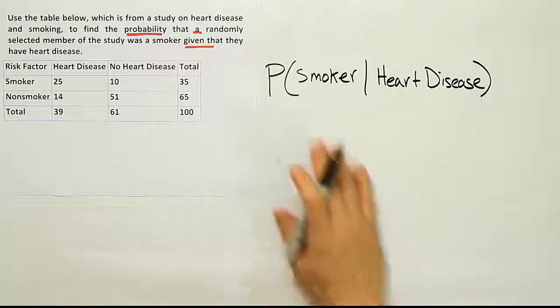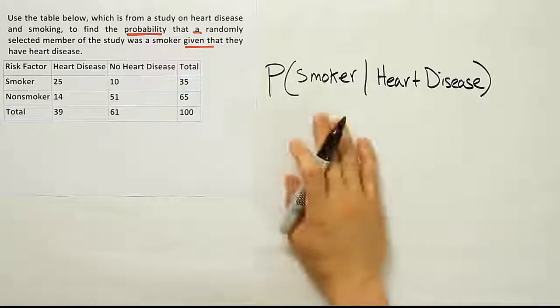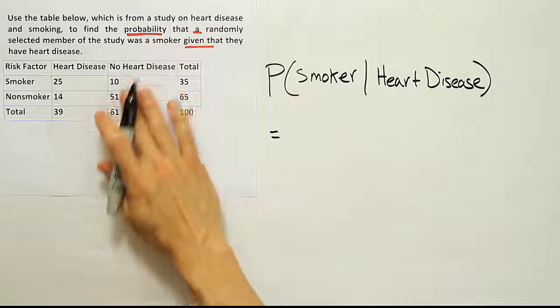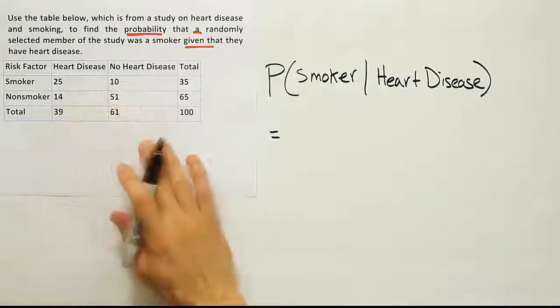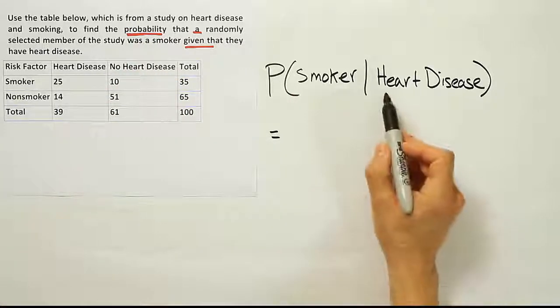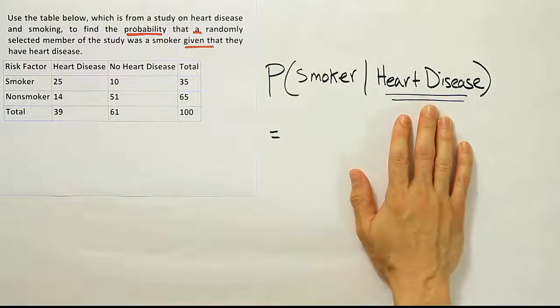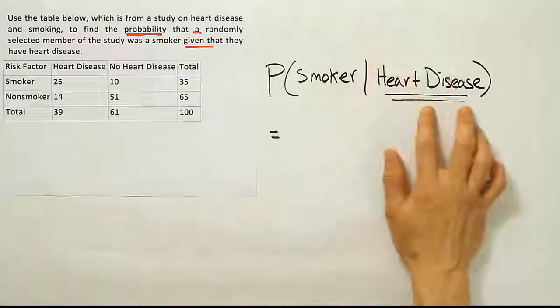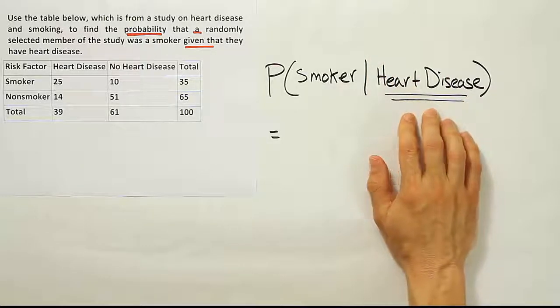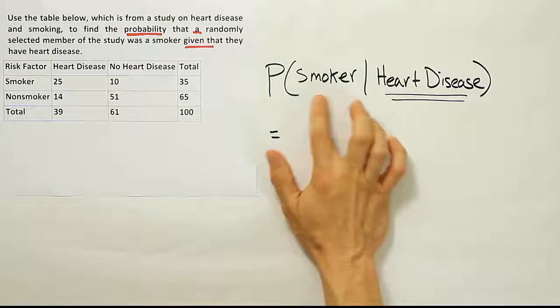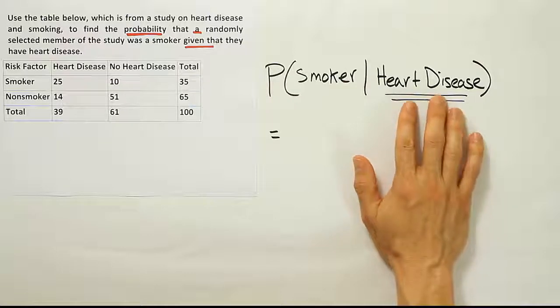Now once we have that expressed, because the data is laid out in the table we want to use the shortcut formula. That means we focus only on this condition in the back. Remember it's this condition that we know is true, we assume to be true, we know has happened. We're asking what's the probability that the person was a smoker given that we know this to be true.